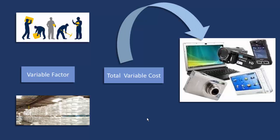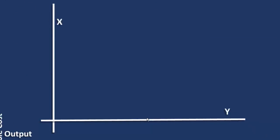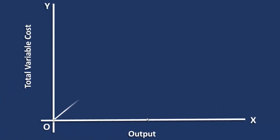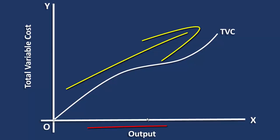We shall see how the variable cost is associated with the output. The total variable cost curve starts from the origin. It means at zero output the total variable cost is also zero. From then on it slopes upward. It increases along with the output.